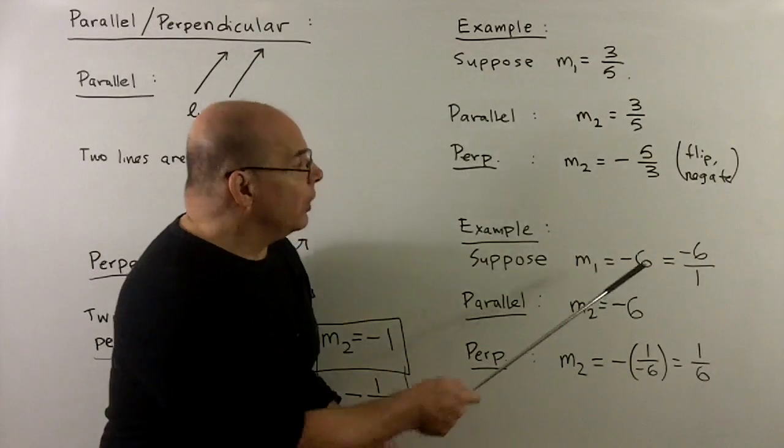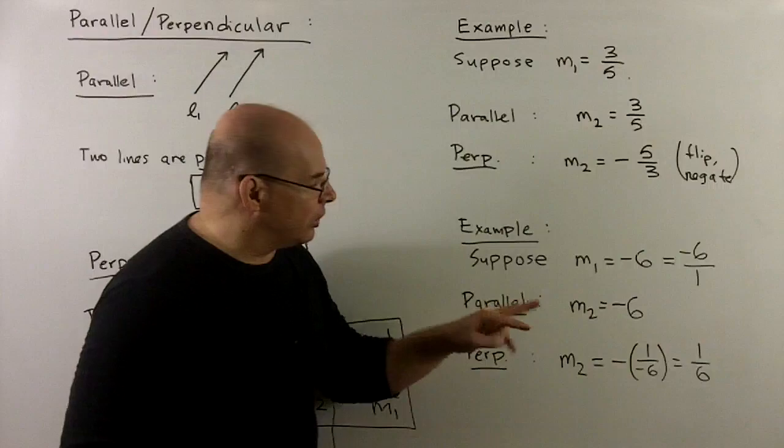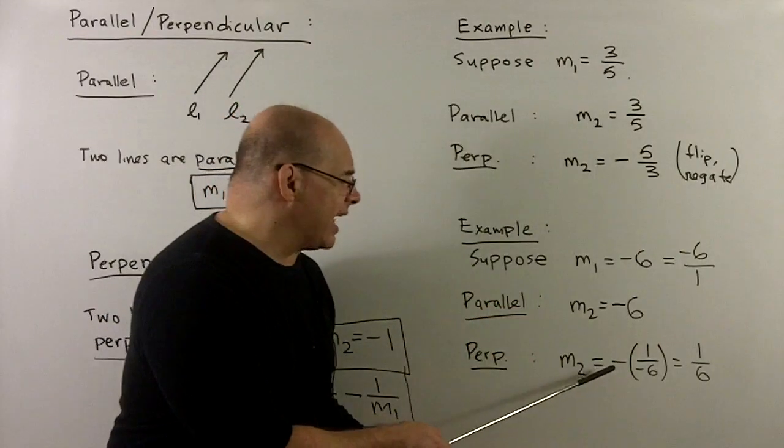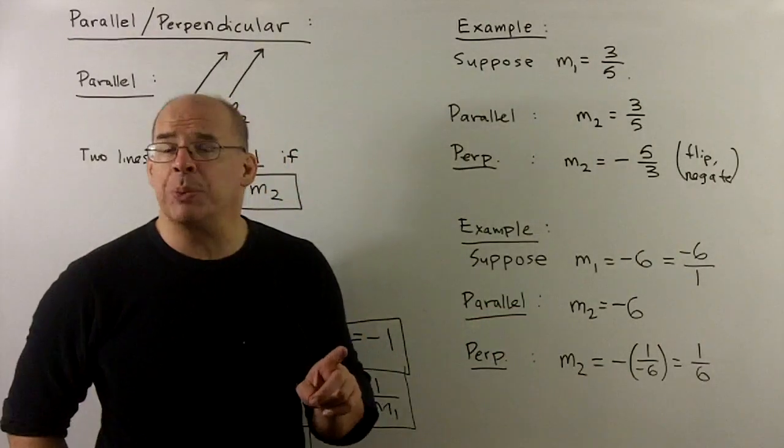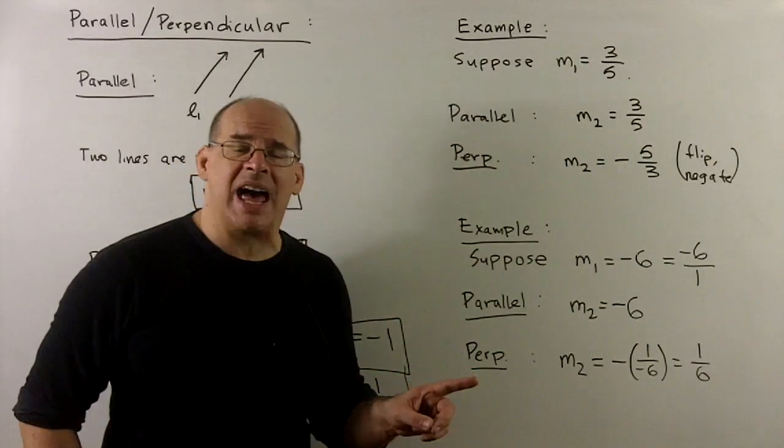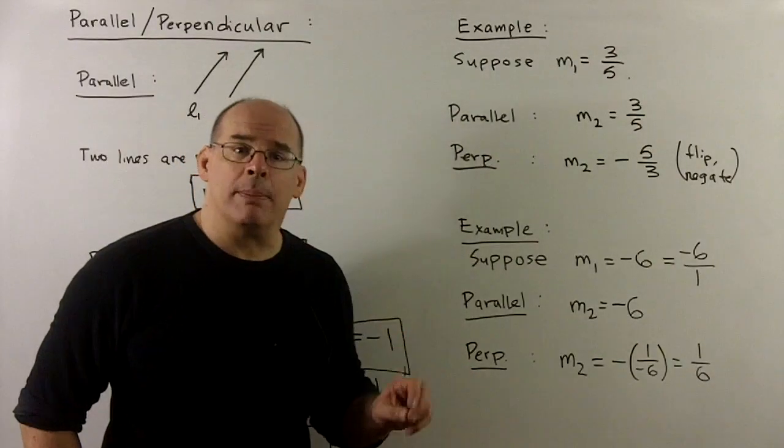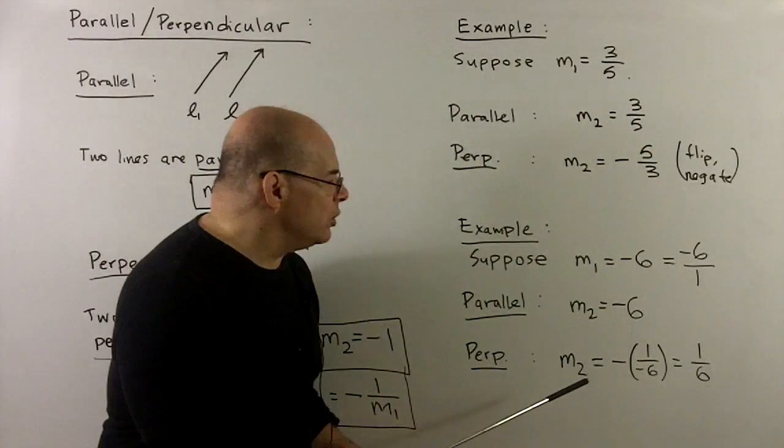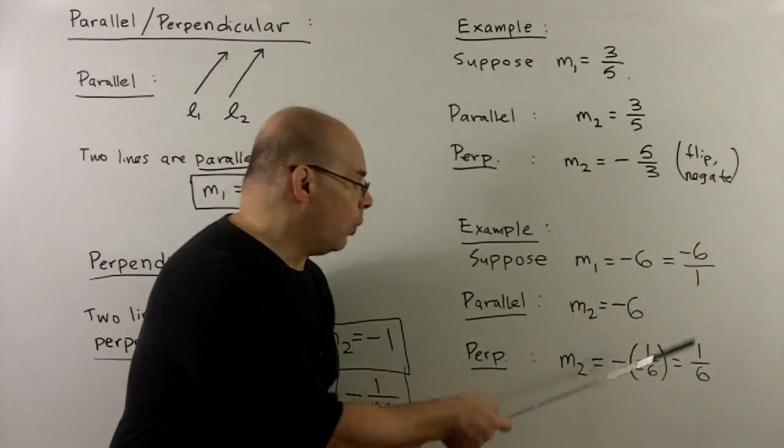For the perpendicular, what are we going to do? We're going to flip and negate, so I turn it upside down, put a minus sign out in front. Note, I'll use parentheses to make sure we don't lose any signs. We've got the double minus sign, which becomes a plus, and so the new slope is equal to 1/6.